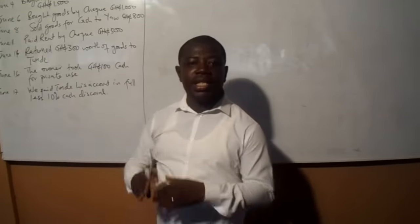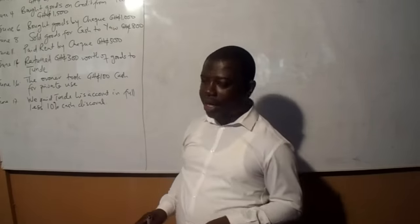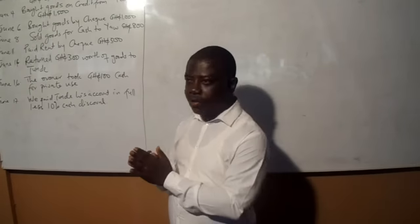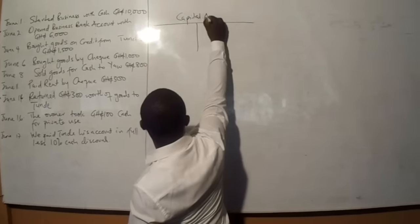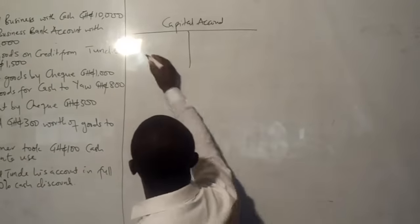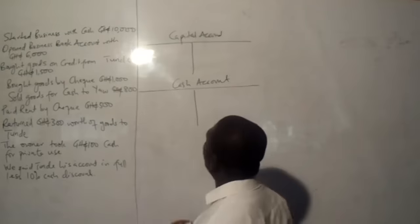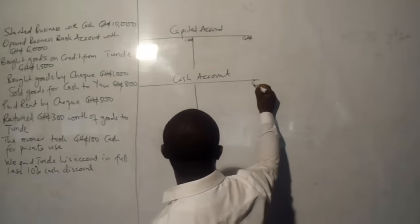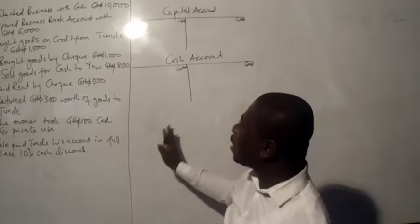Sometimes you will not see cash mentioned — you will see 'started business with 10,000.' By default it is cash, unless the question specifies that the 10,000 was put in a bank account directly; then it will be capital and bank account. But for this transaction, it is capital account and cash account. So we are going to open an account for capital and an account for cash. When we open an account, we put our currency signs at the amount column.